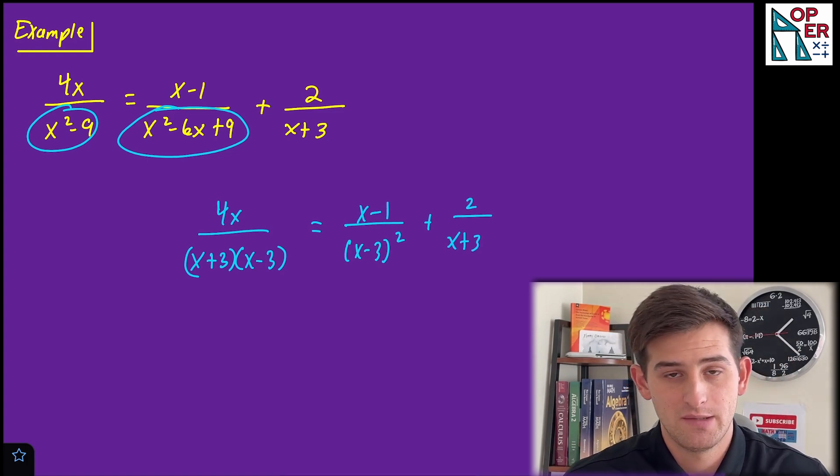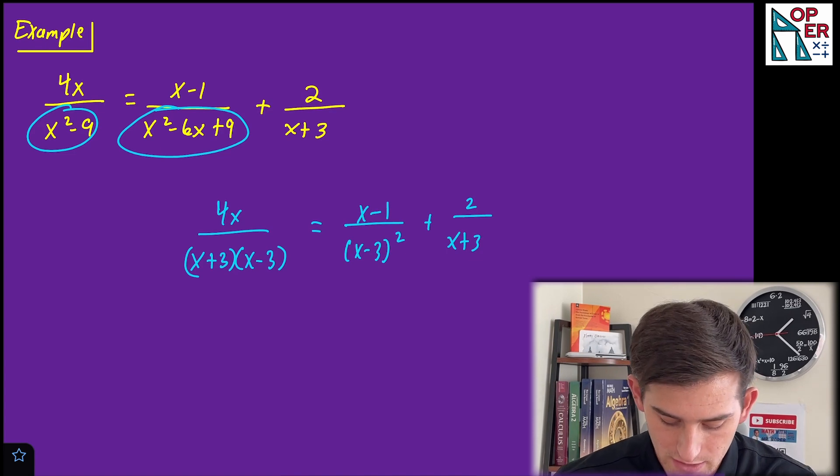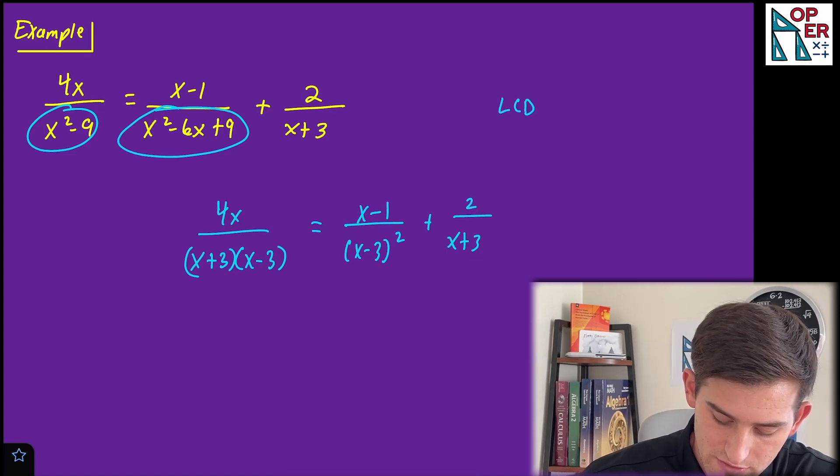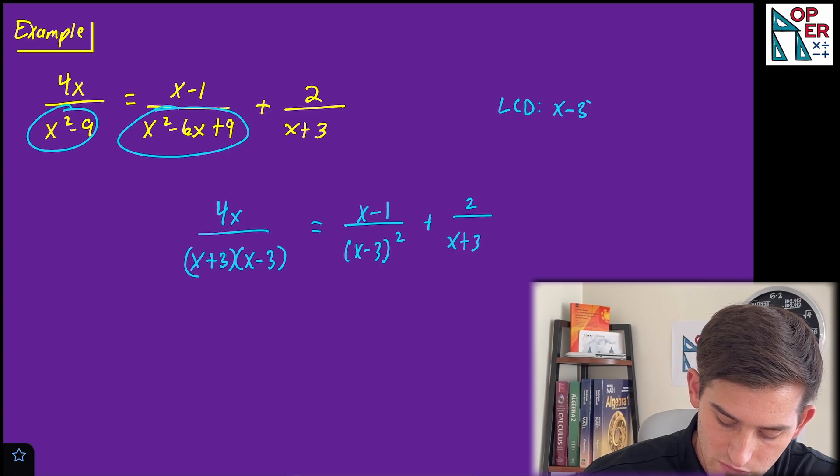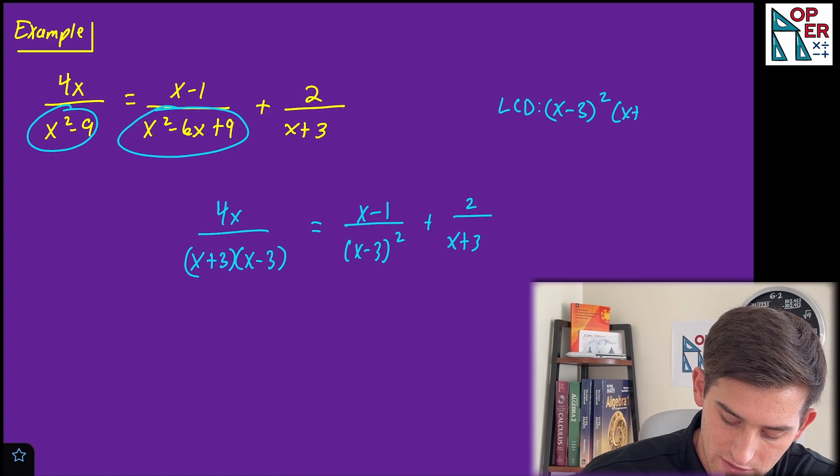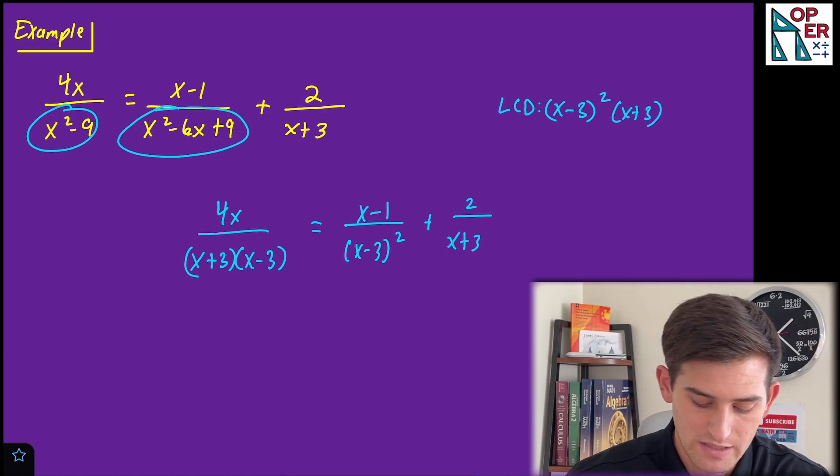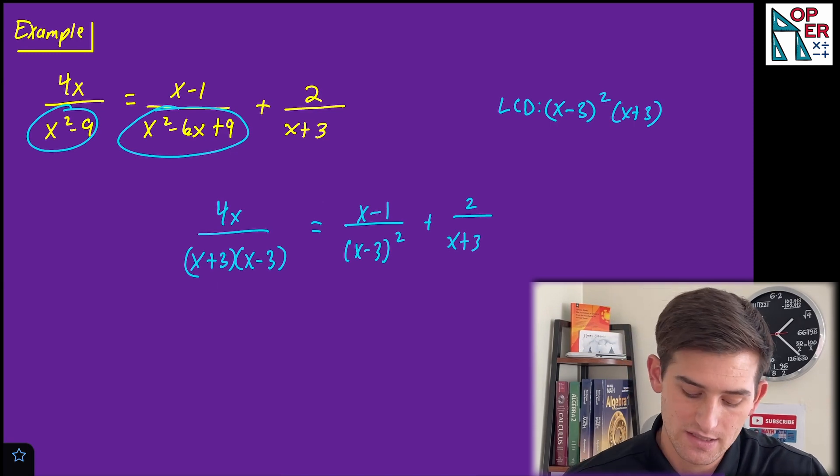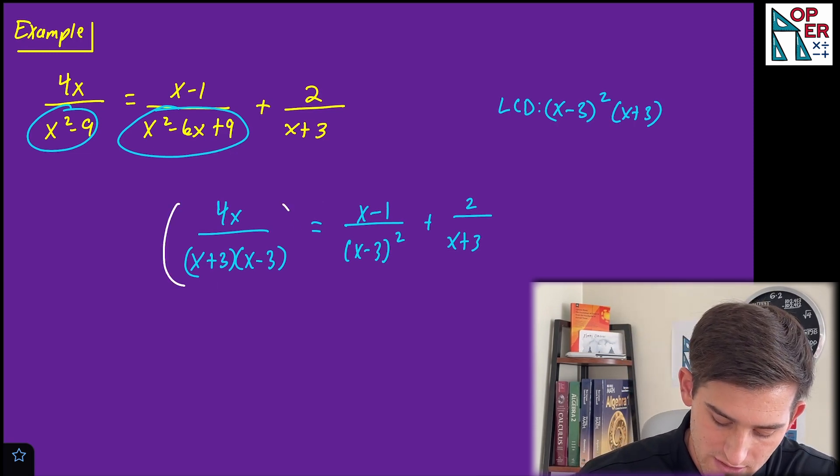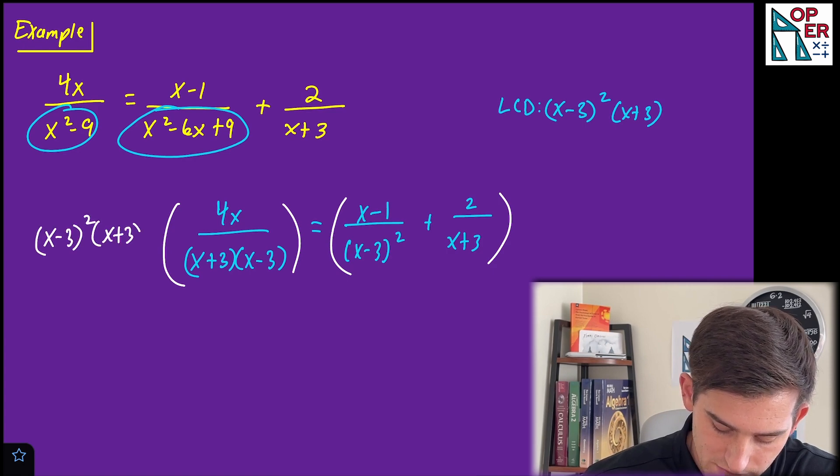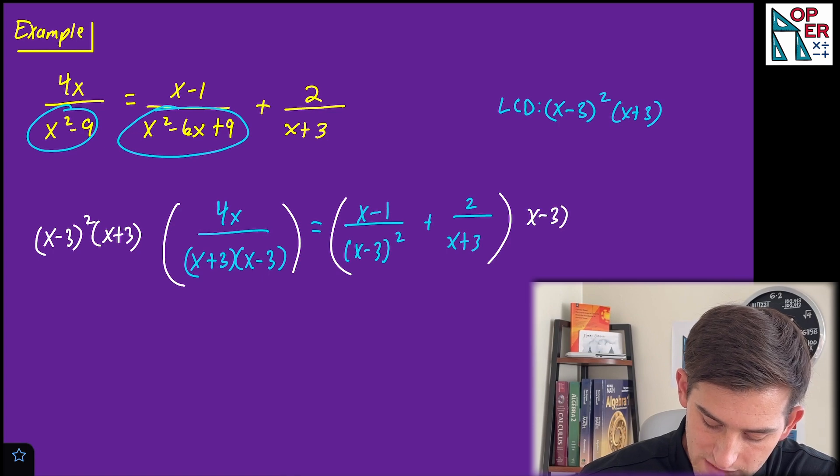So now let's look at our factors in the denominator and let's find our least common denominator. Well, we have X minus three listed as two factors. So that needs to be two factors in our least common denominator. And then we have also a factor of X plus three. So now what we're gonna do is go ahead and multiply both sides of our equation by that least common denominator. So I'm gonna put parentheses around both sides, and let's multiply by X minus three quantity squared and X plus three.